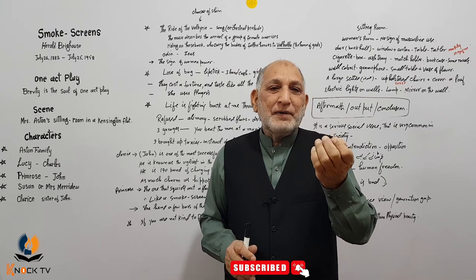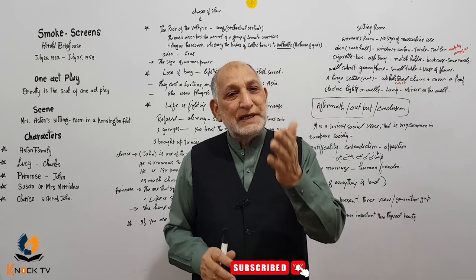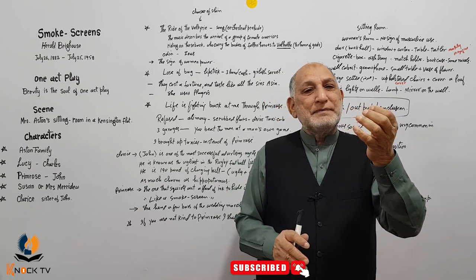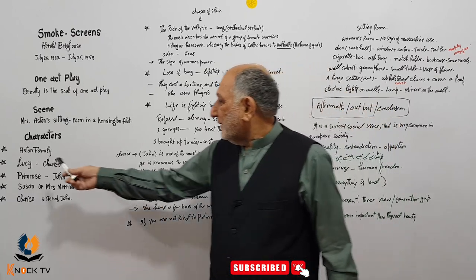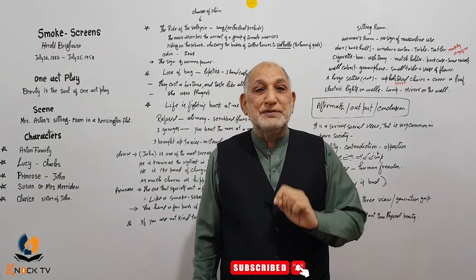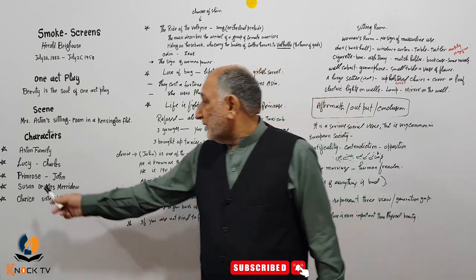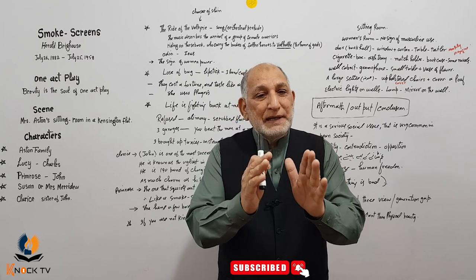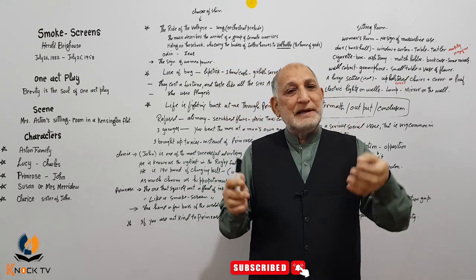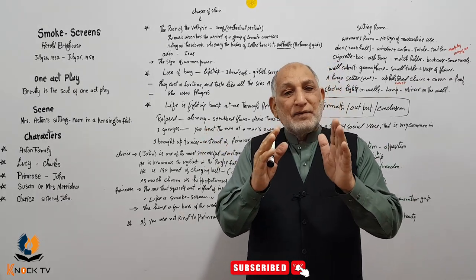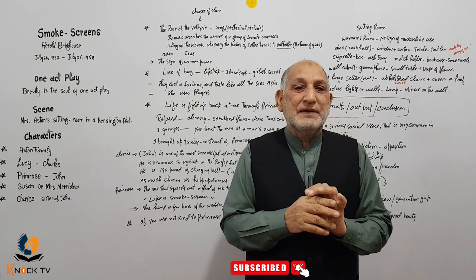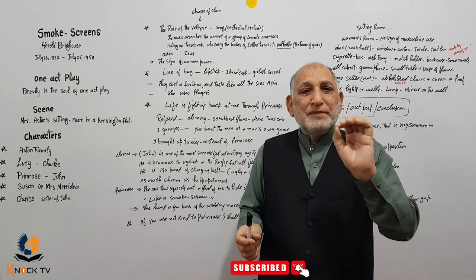اس گھر میں دو لوگ رہتے ہیں: ایک ماں ہے اور اس کی بیٹی۔ ماں نے اپنے خاوند کو 15-20 سال پہلے divorce دے دی ہوئی ہے۔ ماں کا نام Lucy ہے اور بیٹی کا نام Primrose ہے۔ یہ Austin family ہے۔ Lucy کے خاوند Charles کو وہ divorce دے چکی ہے۔ ان کو ملنے Lucy کی بہن، یعنی Primrose کی خالہ، گاؤں سے آئی ہوئی ہے۔ وہ 50 سال کی ہیں، Lucy 40 سال کی ہے، اور Primrose 20 سال کی young اور energetic girl ہے۔ تینوں female ہیں۔